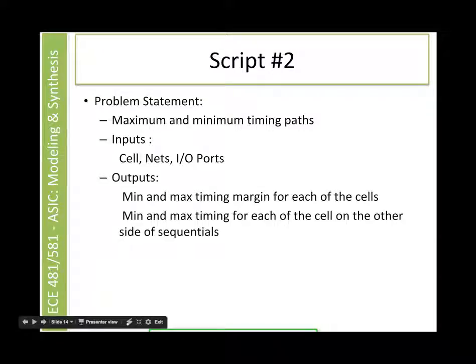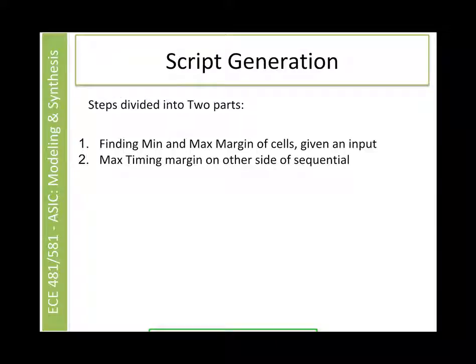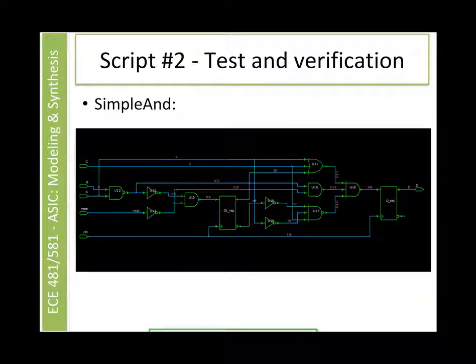Moving on to script 2, the project defines us to find the maximum minimum timing paths. The inputs which the user gives are cells, nets, or any input or output ports defined in the design. The outputs are to generate the minimum and maximum timing margin for each of the cells in the paths and to find the maximum timing margin on the other side of the sequential. That's how we have divided the script as well.